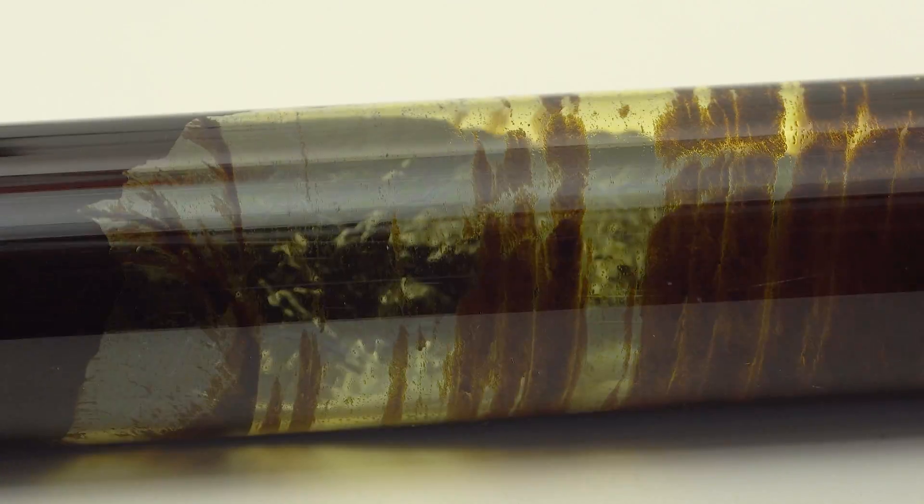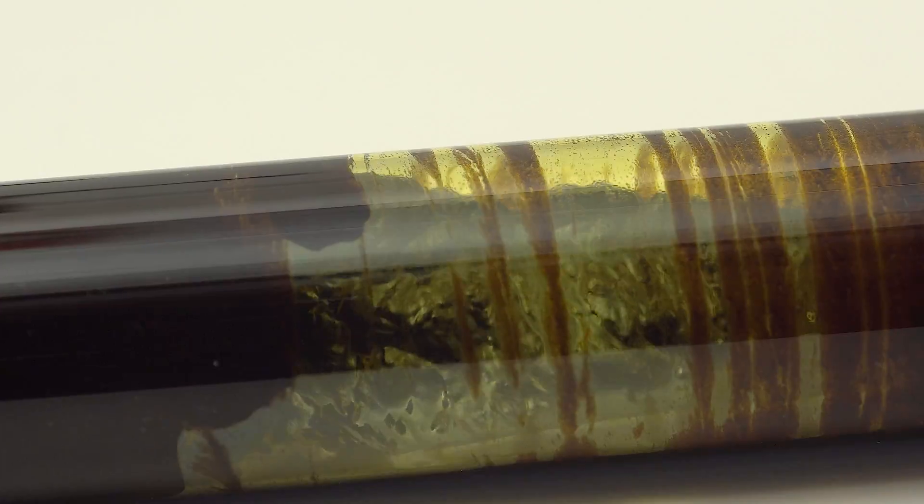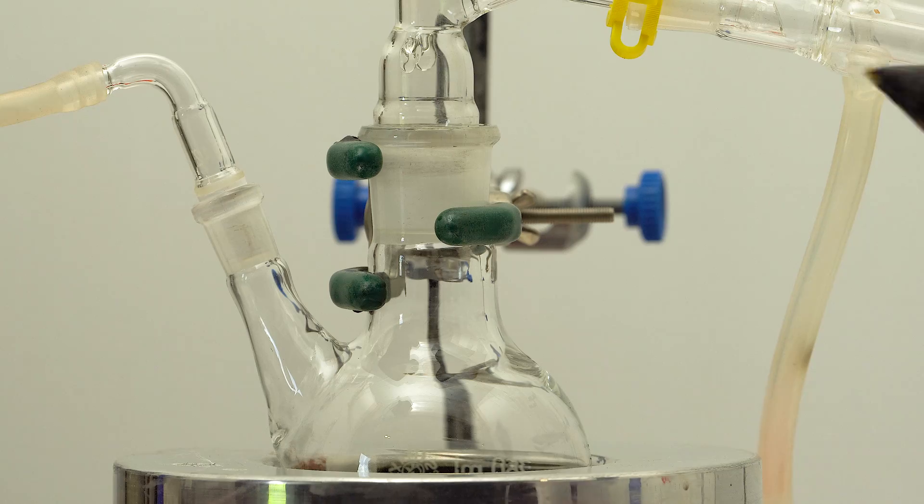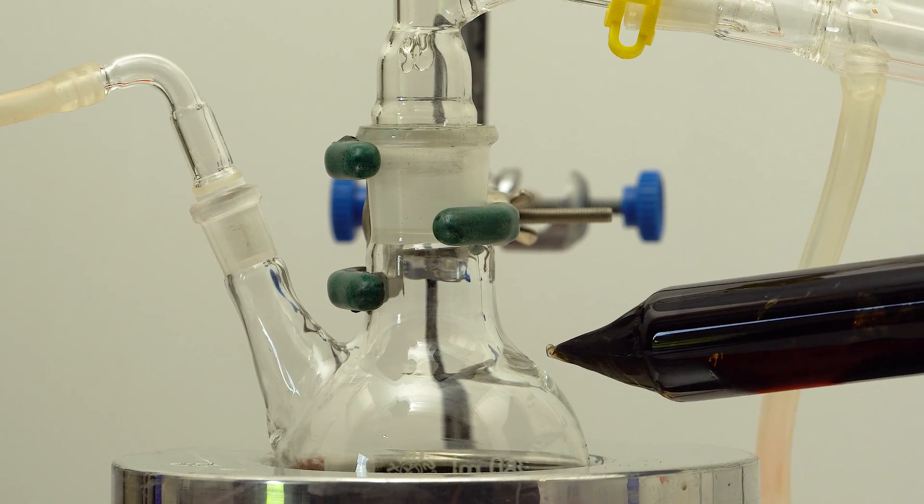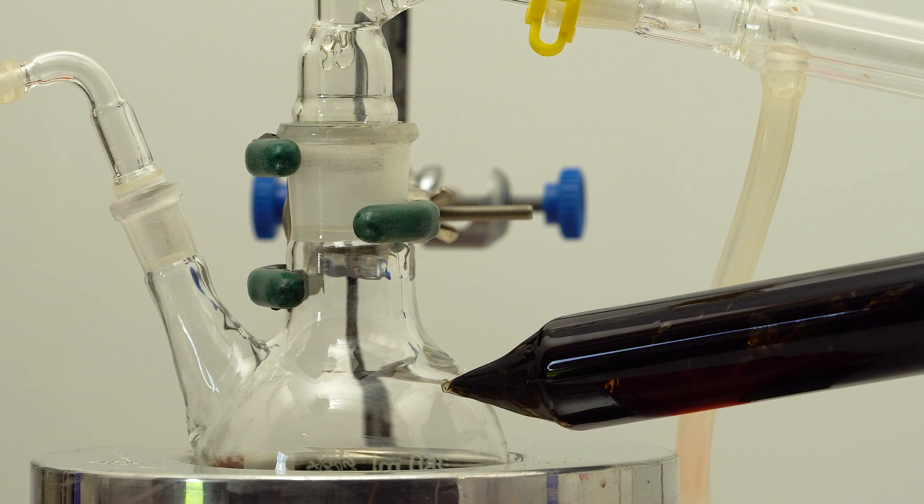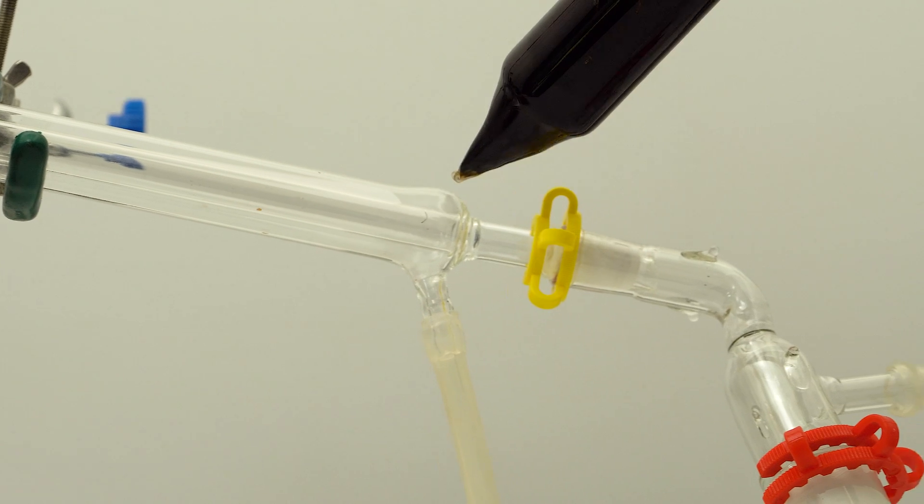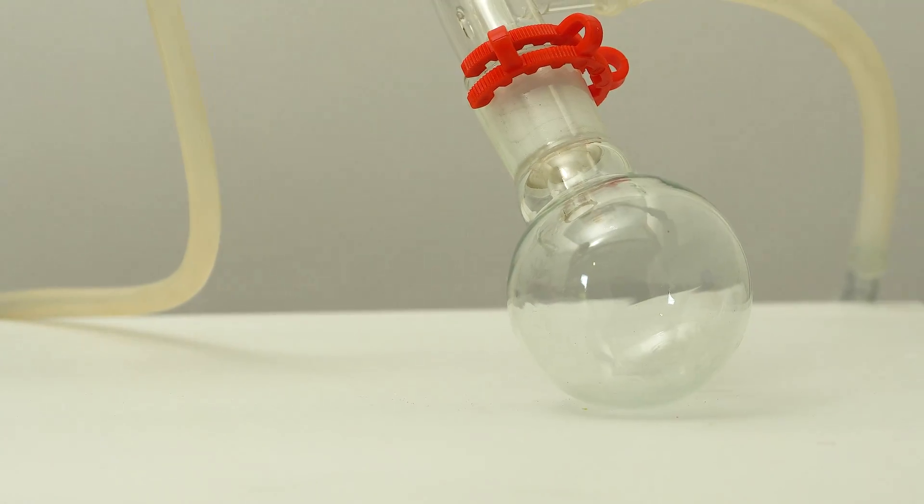To obtain pure vanadium tetrachloride from this ampoule, it's necessary to distill the reagent in a stream of chlorine. I'll place the ampoule in a two-neck flask, introduce a flow of dry chlorine and carry out a standard distillation, collecting the fraction that boils around 150 degrees Celsius.